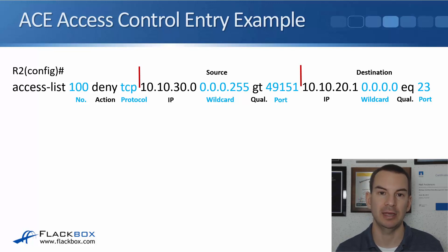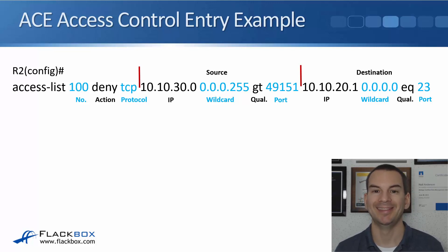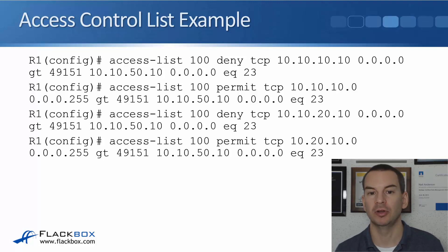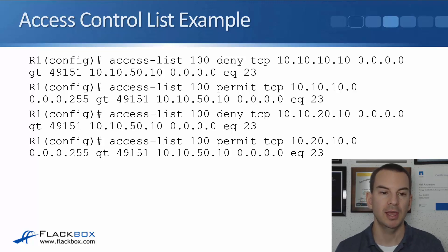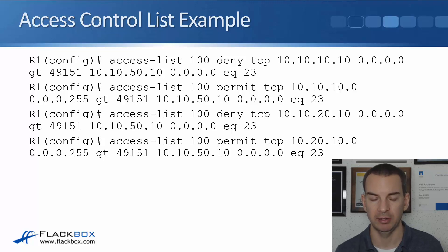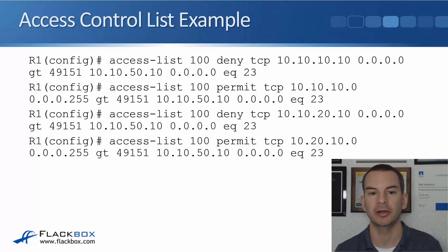The next section covers the destination: the destination IP address, the destination wildcard mask, a qualifier, and then the destination port. Here's an example ACL - access-list 100 deny TCP from 10.10.10.10 0.0.0.0 when the source port is greater than 49151, going to destination 10.10.50.10 0.0.0.0 when the destination port is 23. Multiple access control entries together make up the rules controlling traffic allowed or not allowed through the router.